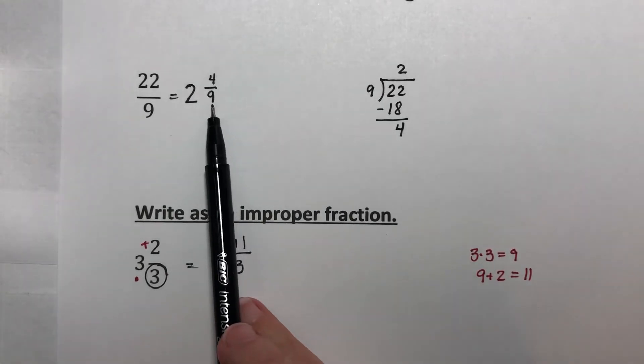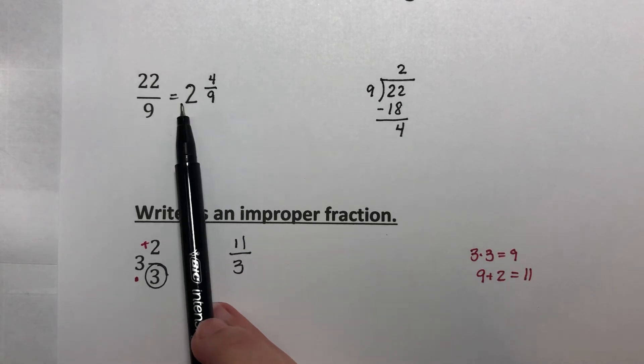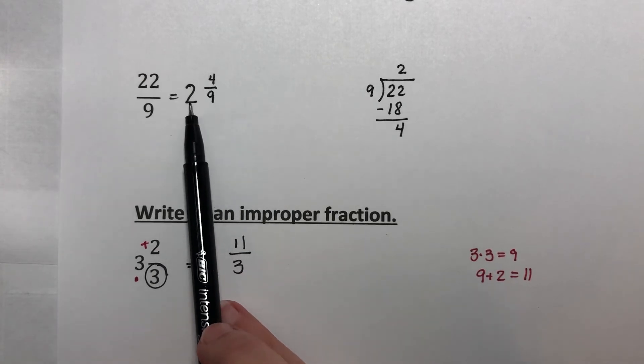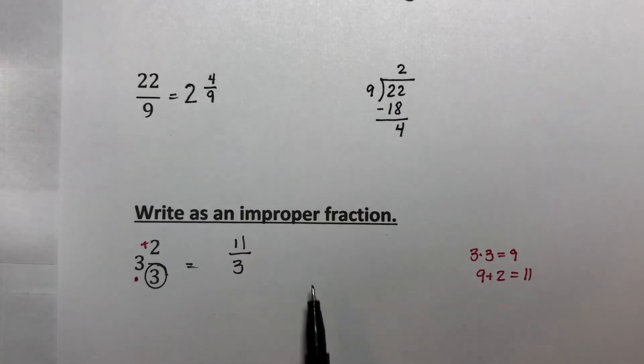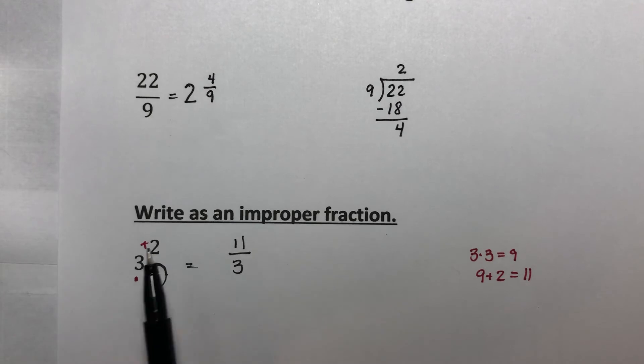Look right here if we did this. 2 times 9, 9 times 2 is 18. 18 plus 4 is 22 ninths. If we divide here, 3 divides into 11 three times with 2 left over. We're just reversing the process.